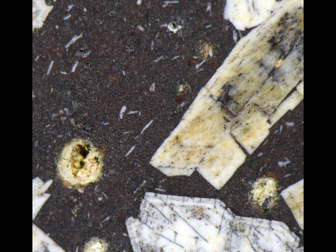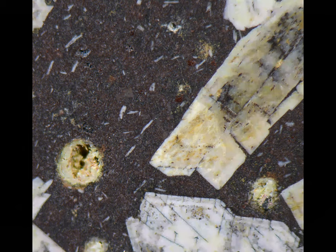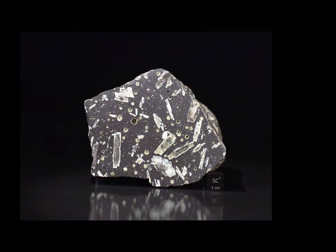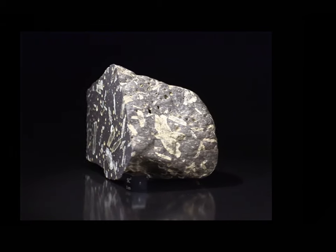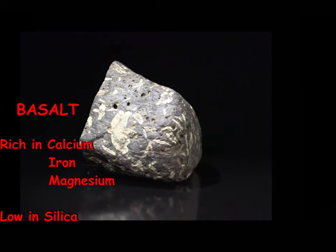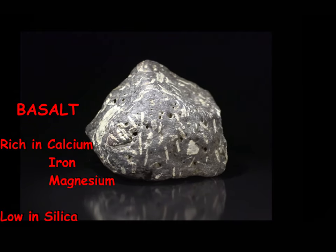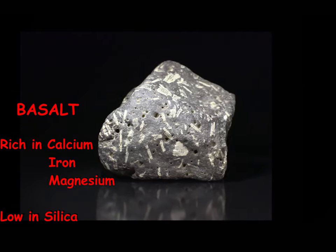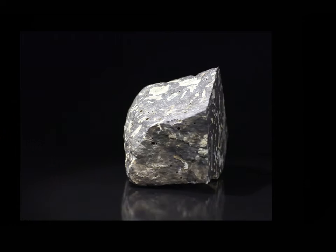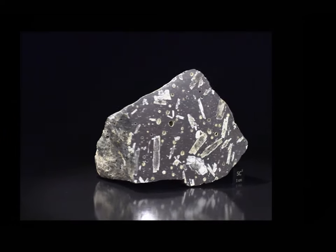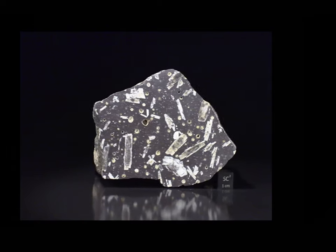Then the magma erupted as a lava flow. The eruption was probably not as explosive as Mount St. Helens, but more like the eruption associated with recent activity in Hawaii. This assumption is based on the composition of the rock — it is rich in calcium, iron, and magnesium, and low in silica. Low silica content lavas are more prone to flowing rather than being explosive. Once at the surface, the lava froze or crystallized to produce the rock seen here.